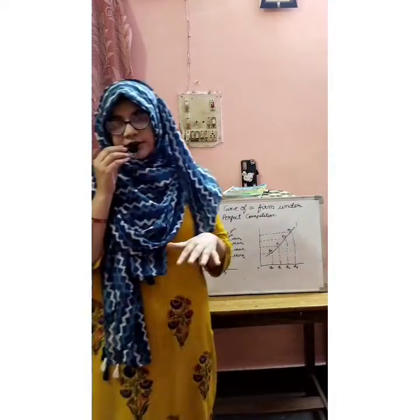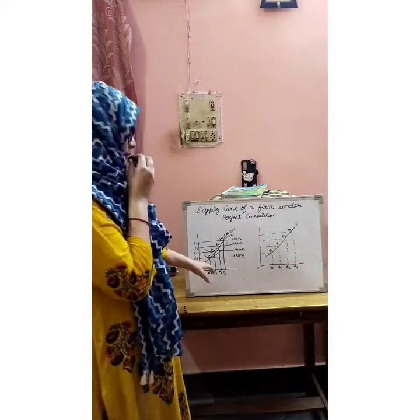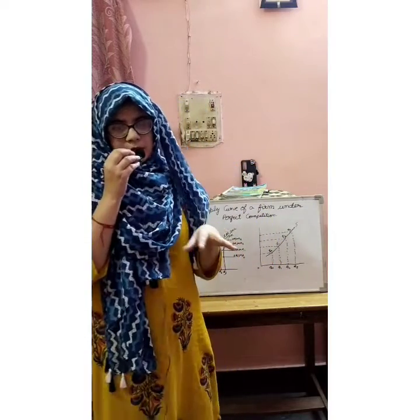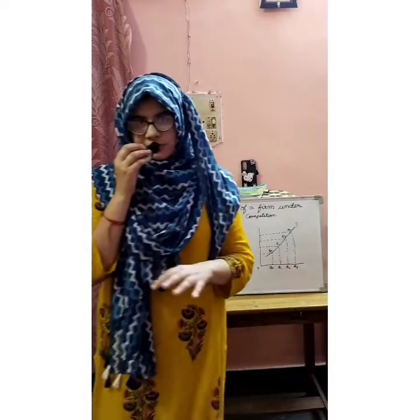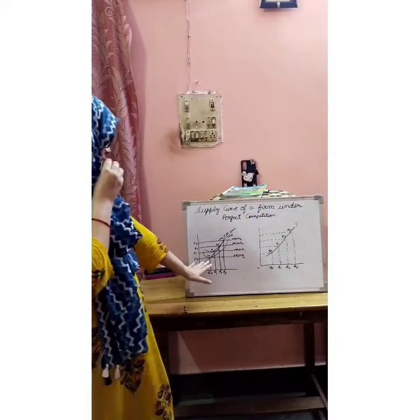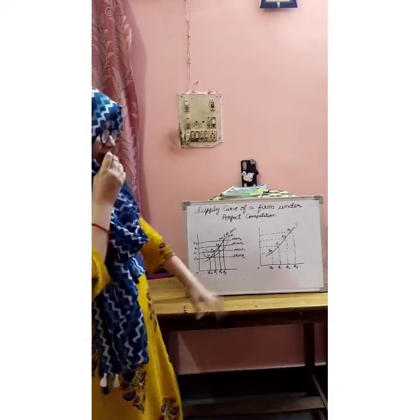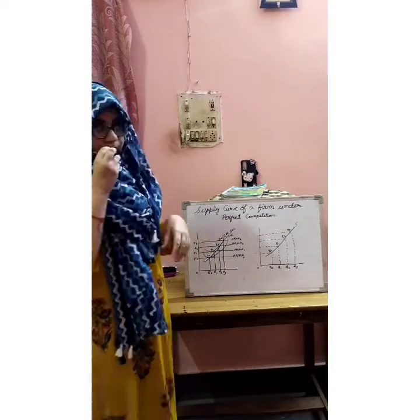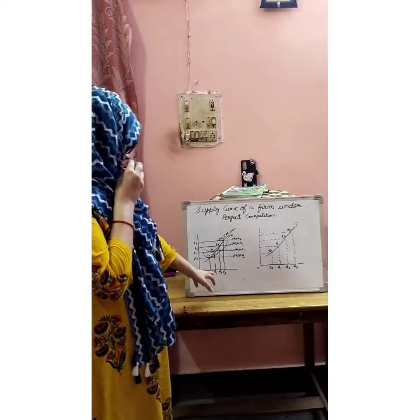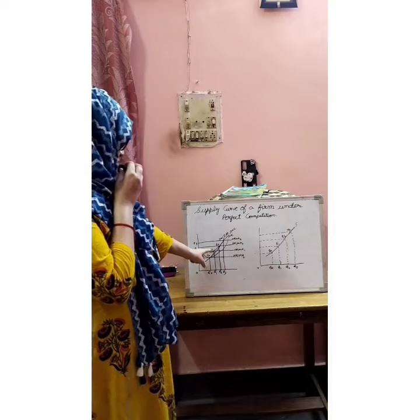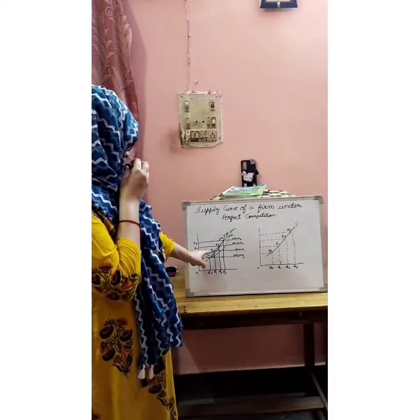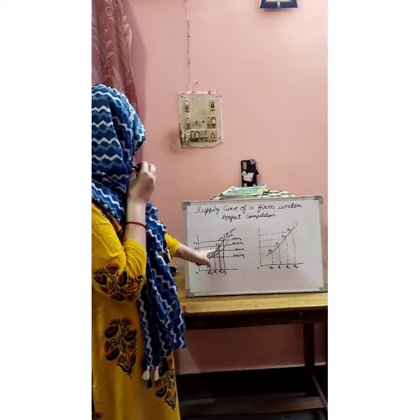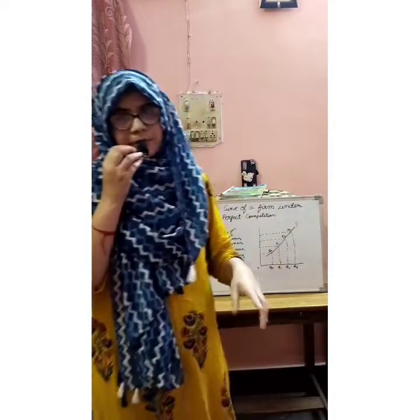E0 is where the price intersects the average variable cost. Below this point, the firm is not able to cover any type of cost, so E0 is the shutdown point of the firm. If the firm goes below P0, it has to shut down because it will go into losses. At price P1, the quantity is Q1 and equilibrium is E1. At this point, the firm is able to cover variable cost plus average cost — this is the break-even point.